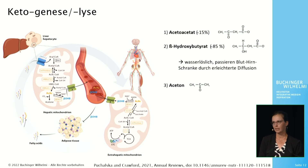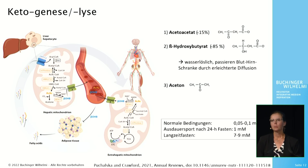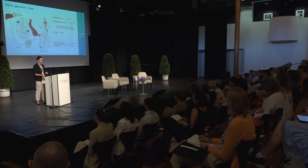Acetoacetate and beta-hydroxybutyrate are water-soluble and pass the blood-brain barrier by facilitated diffusion. In peripheral tissues, they are degraded in mitochondria via the citric acid cycle. Under normal conditions, the concentration of ketone bodies in the blood is very low, with beta-hydroxybutyrate predominating at about 85%. During fasting, ketone body levels rise to values of up to 7 to 9 millimolar.